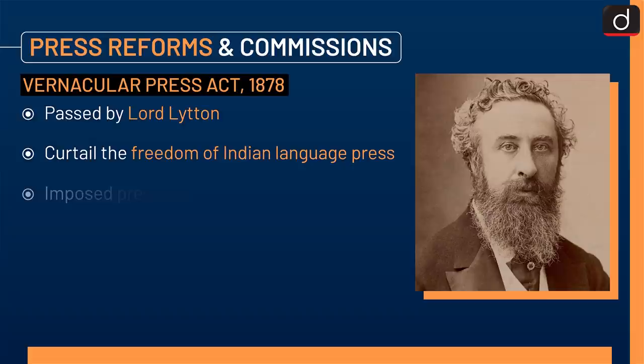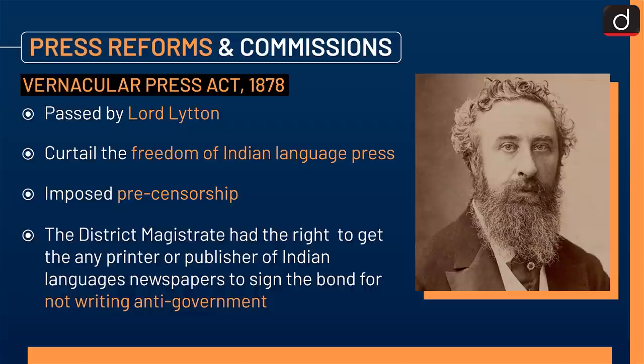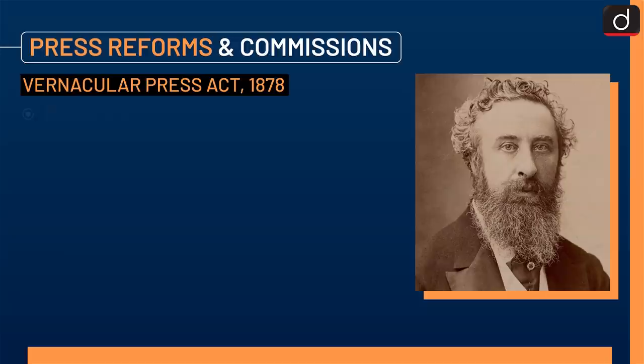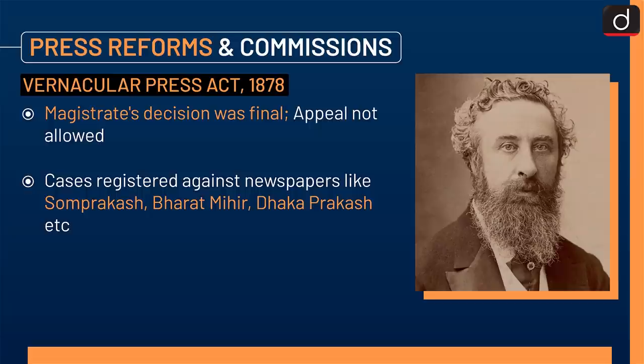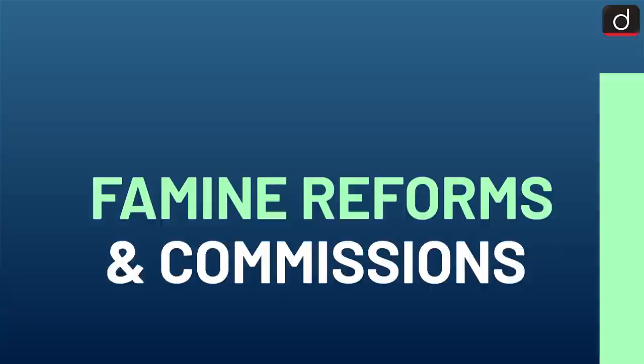Next is the Vernacular Press Act 1878, passed by Lord Lytton. It curtailed the freedom of the Indian language press and imposed pre-censorship. The district magistrate had the right to compel any printer or publisher of Indian-language newspapers to sign a bond against writing anti-government content. The magistrate's decision was final and no appeal was allowed. Cases were registered against newspapers like Soma Prakash, Bharat Mihir, and Dhakka Prakash.